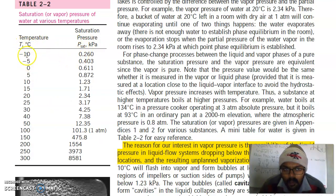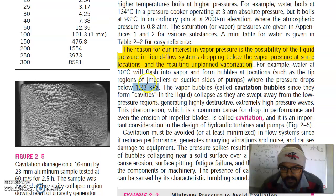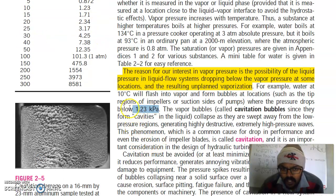The reason for our interest in vapor pressure is the possibility of liquid pressure in liquid flow systems dropping below the vapor pressure at some locations and the resulting unplanned vaporization. For example, water at 10 degrees Celsius will flash into vapor and form bubbles at locations such as the tip regions of impellers or suction sides of pumps where the pressure drops below 1.23 kilopascals. On the impeller blades on the suction side, the pressure will drop below this value 1.23 kilopascals and the water will start to boil at 10 degrees Celsius.